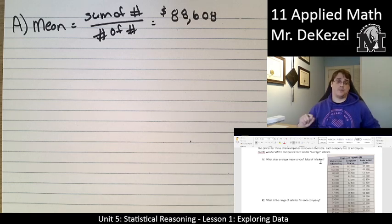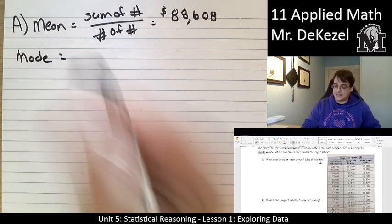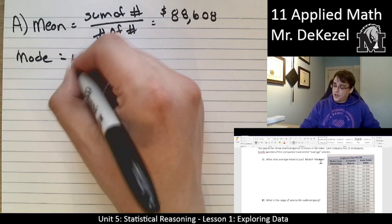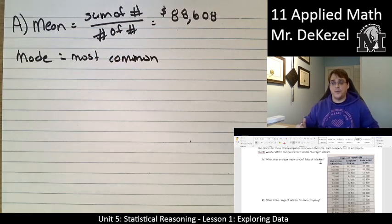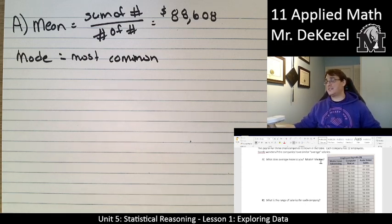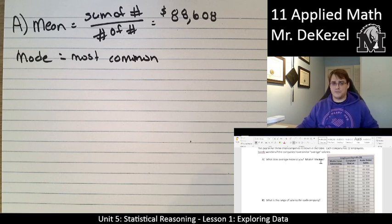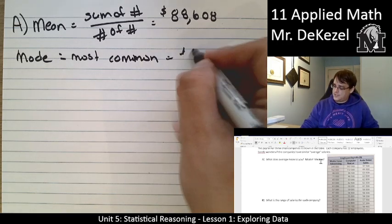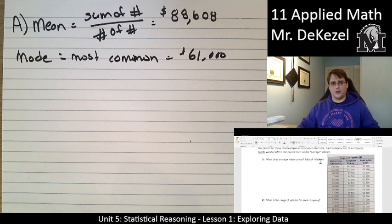Let's take a look at some other ways we can talk about the average. Average can also mean mode, an excellent way to look at data. The mode is the most common number. The most common amount that people get paid in this company. If you check out the list of Media-Focused Advertising, 61,000 is there twice. That is the most of any number. There is no other doubles. So in this case, the most common number is 61,000. That's good, but it's lower than the mean.